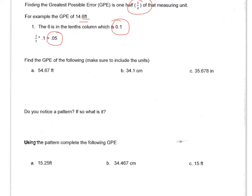So let's take a look at some more examples. We're going to start by looking at the number in the last place, and the 7 is in the hundredths place, which we write 0.01. And so then we're going to multiply that by one half. So in your calculator, it's 0.01 times 0.5, and so the greatest possible error is 0.005.